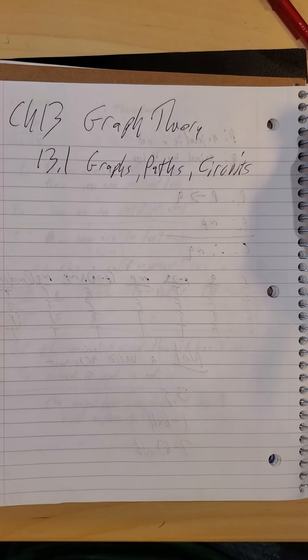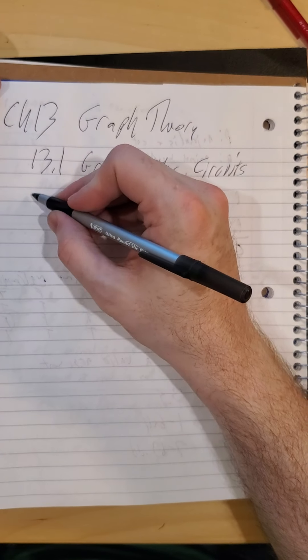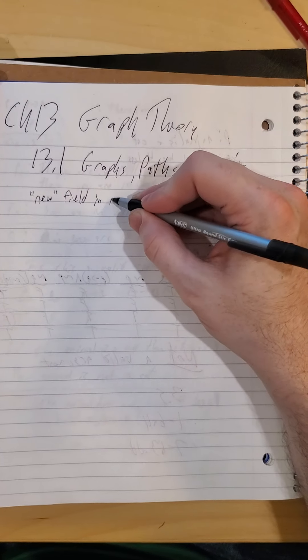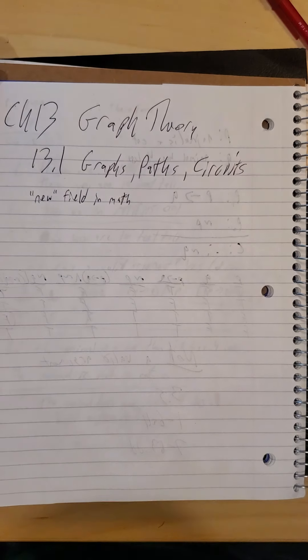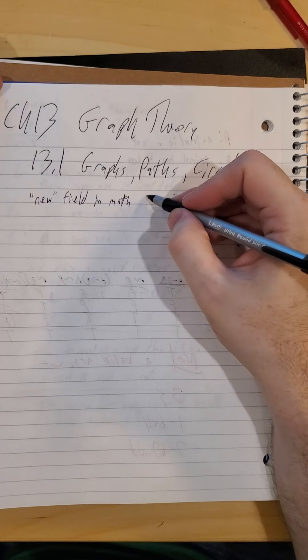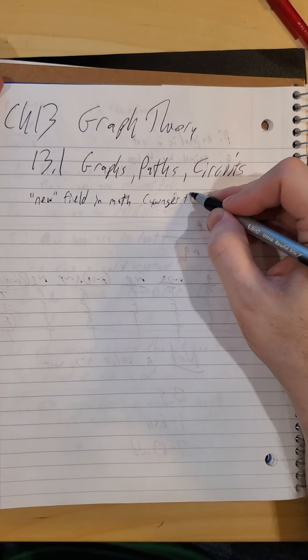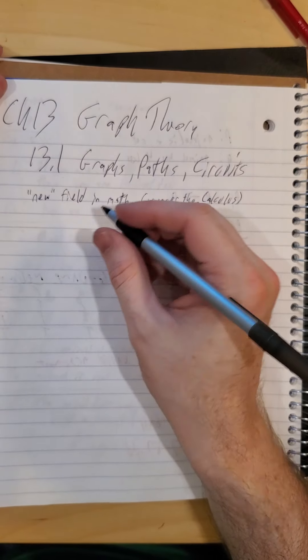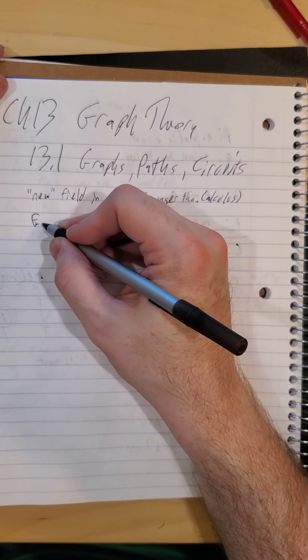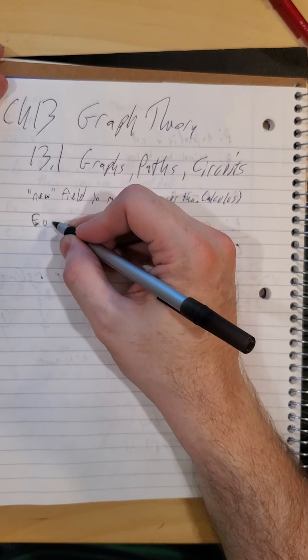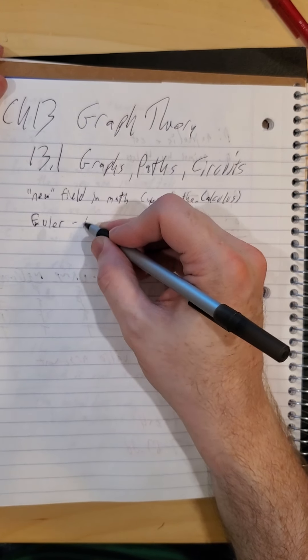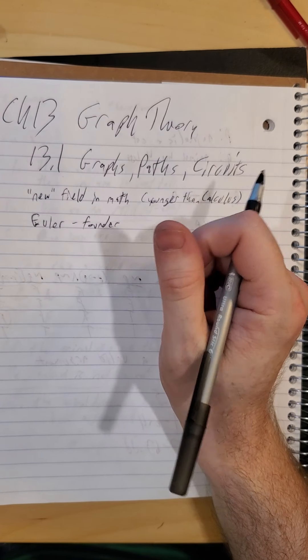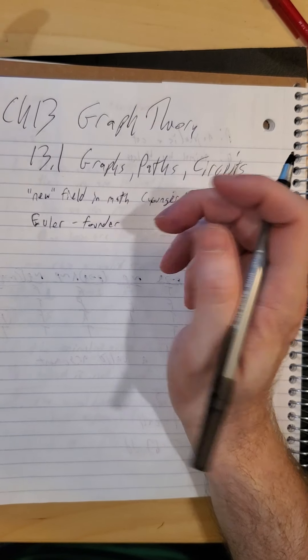This is relatively speaking, a new field in math. I'll use new sort of loosely. It's older than any of us, but it is definitely younger than calculus. Euler was the founder. You'll remember that name from our Venn and Euler diagrams. He was a pretty prolific mathematician with an impressive body of work.